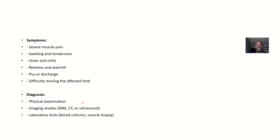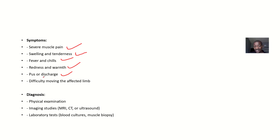The symptoms of pyomyositis include severe muscle pain, swelling and tenderness, fever and chills, redness and warmth, and pus — which could be confined in one place or there could be a discharge. There's also difficulty moving the affected limb.